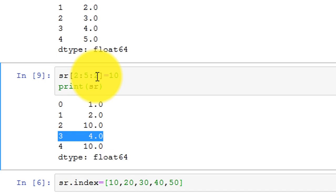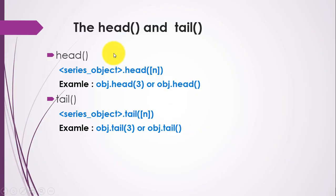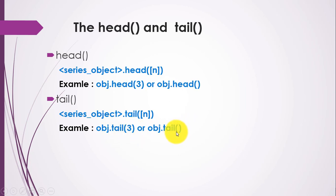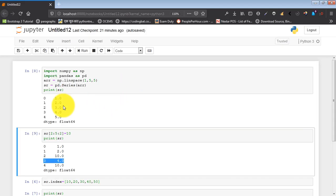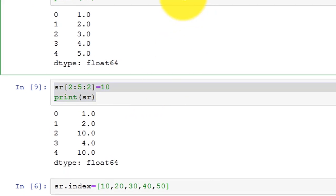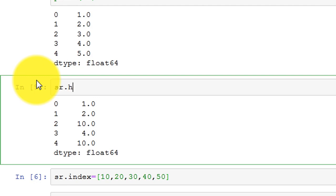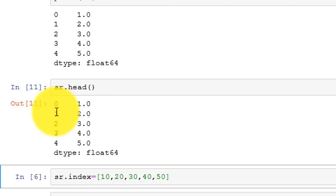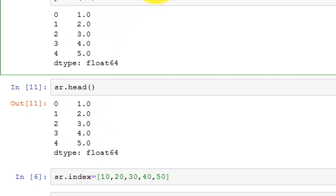Now let's move to the next topic: head and tail. The head() method returns n number of rows from the top of the Series. By default n is 5, but you can specify any value. Similarly, tail() returns the bottom-most rows — by default 5. Let's see the example. I'll re-execute my array with 15 elements and use sr.head() to get the default top 5 rows.